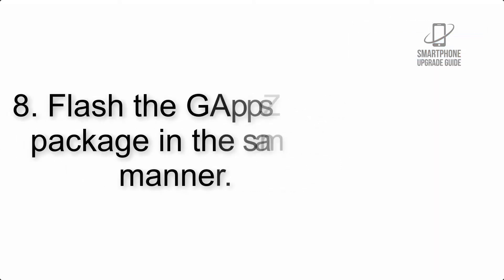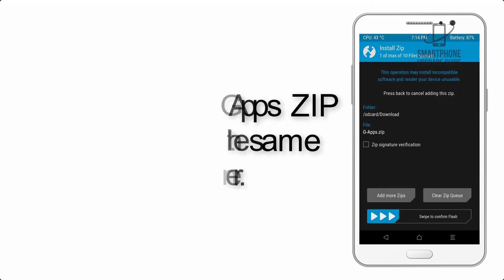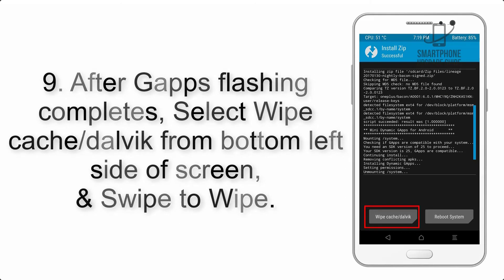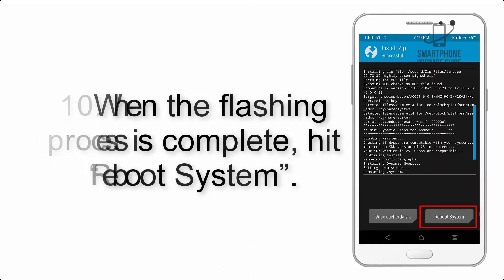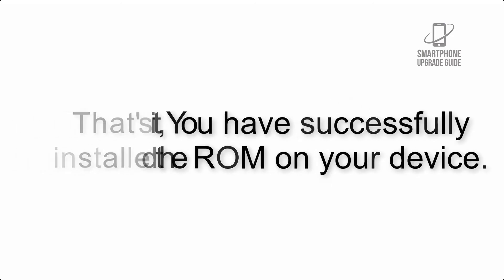Step 8: Flash the GApps zip package in the same manner. Step 9: After GApps flashing completes, select Wipe Cache and Dalvik from the bottom left side of the screen and swipe to wipe. Step 10: When the flashing process is complete, hit Reboot System. That's it — you have successfully installed the ROM on your device.